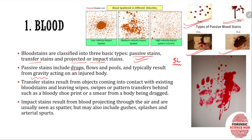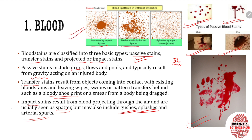Transfer stains occur when blood is transferred from one place to another — for example, blood transferred to a hand and then to the wall. Shoe prints can also lead to transfer of blood stains, as can clothing or bags. Impact stains result when blood flows out in the form of spatter or arterial spurts. These are of three types: low velocity, medium velocity, and high velocity, with visible differences in spatter formation depending on the velocity of impact.